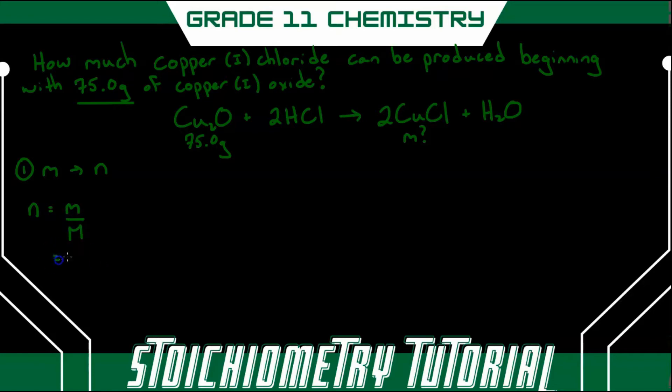So its mass is given as 75.0 grams. Now the molar mass, you're going to have to look at your elements on your periodic table and add up all of their mass numbers. So first for copper, we have two copper atoms, each with a mass number or molar mass of 63.5 grams per mole. And then we have one oxygen atom with a molar mass of 16 grams per mole.